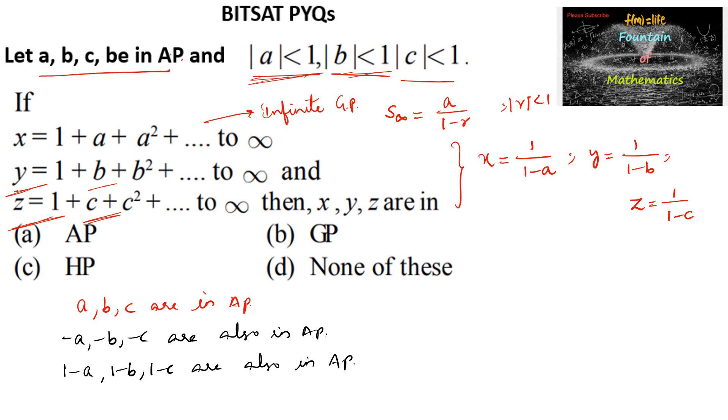And then if the terms are in AP, then the reciprocals of the terms, that is 1 upon 1 minus a, 1 upon 1 minus b, 1 upon 1 minus c are in harmonic progression.